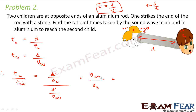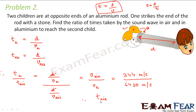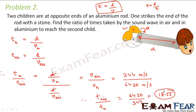The velocity of sound in air is 344 m/s and in aluminium is 6420 m/s. Therefore the ratio of time taken in air to time taken in aluminium is 6420 / 344, which comes out to be 18.55. This is the ratio of time taken for sound to travel through air versus aluminium.